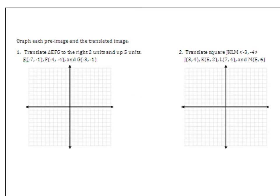I think it's easiest just to show you how this works. Number one says graph each pre-image and the translated image. It says translate triangle E, F, G to the right two units and up five units. First, plot points E, F, and G — pause the video and do that. I've plotted the points, labeled the points, and connected the points. Make sure you put the letters E, F, and G next to each of their respective points, then connect them — it should form a triangle.